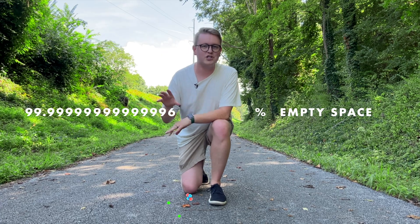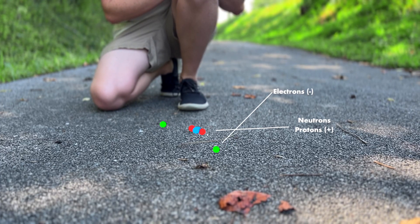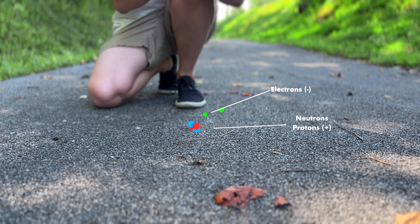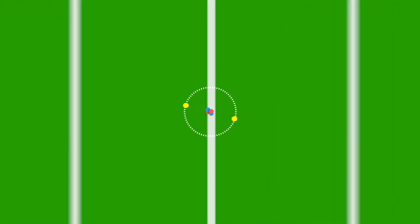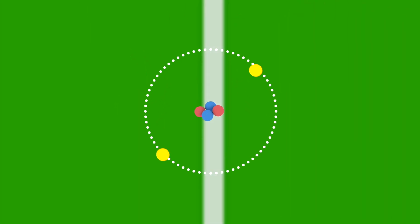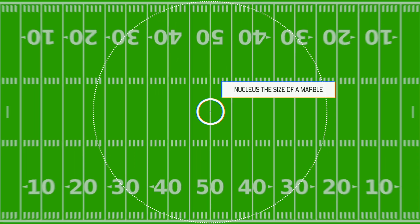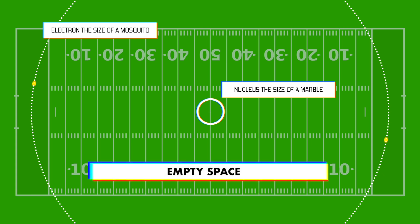This model right here doesn't show that at all. To really see that, we need to expand this helium atom to the size of a football field. The nucleus would be the size of a marble on the 50 yard line, and the electron would be the size of a mosquito on the field goal line. It's mostly empty space — and this is why neutron stars are so dense.